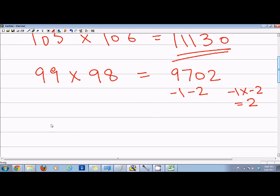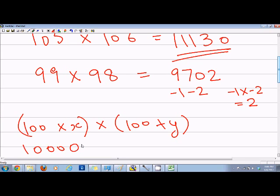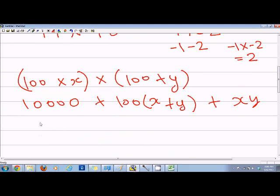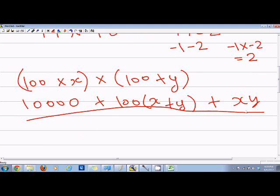Let's go to the proof. For example, if I have 100 plus x and I want to multiply by 100 plus y, we have 10000 plus 100x plus 100y plus xy. If you look closely at this equation, my trick was very similar to it.